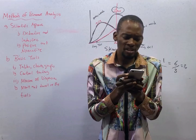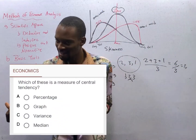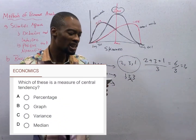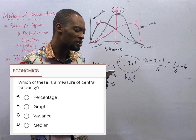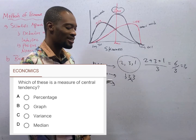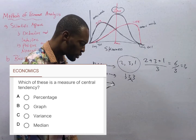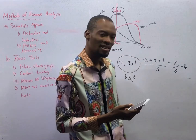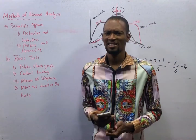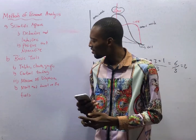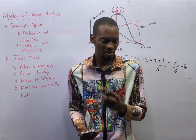Which of these is a measure of central tendency? The measures of central tendency are mean, median, and mode. So out of all the options, only median is a measure of central tendency — option D is the correct option. Ladies and gentlemen, relax each way and prepare for the next set of episodes. You are going to enjoy them. Thank you. Thanks for watching.